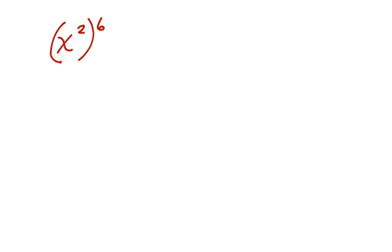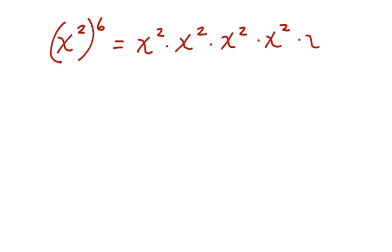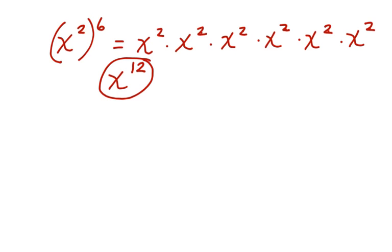What about here? Now you have x squared to the sixth power. This is like saying I have x squared times x squared times x squared times x squared times x squared times x squared. If I was going to multiply this out, I would add all these exponents: 2, 4, 6, 8, 10, 12 — and I would get x to the twelfth.